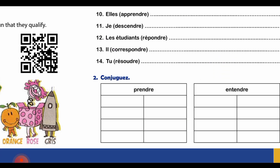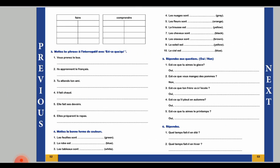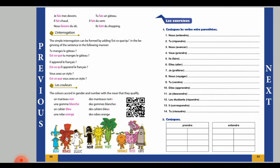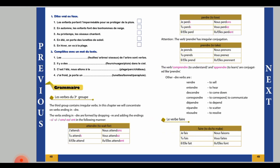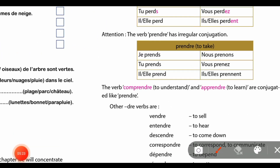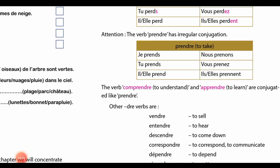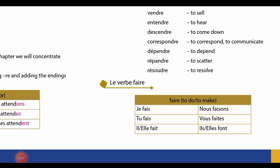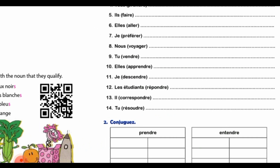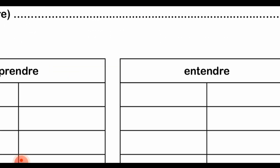Now coming to question number 2. हमें 'prendre', 'entendre', 'faire', और 'comprendre' - ये 4 verbs conjugate करनी हैं। 'Prendre' verb already conjugated है in your book on page number 49, तो वहाँ से आप लोग देख सकते हो। फिर मैं 'entendre' verb पर आती हूँ।